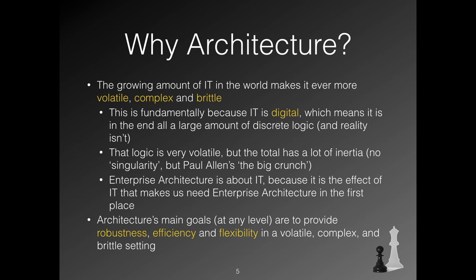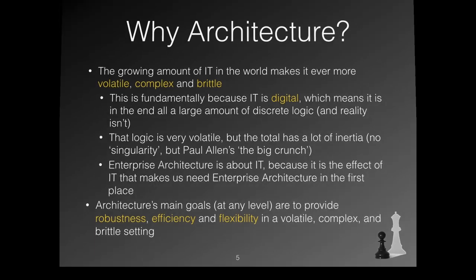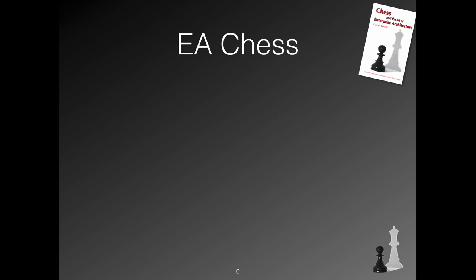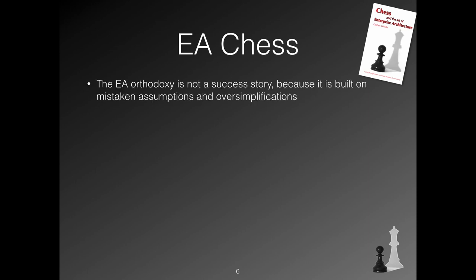It runs in the other direction as well — new technology makes the business change. My approach to enterprise architecture is based on the experience that for effective architecture you need to do things quite differently from the ways proposed by the orthodox so-called best practices. I think the term 'best practice' is one of the most misused terms in our field — treat it with caution. My 2016 Enterprise Architecture Conference keynote explains why orthodox approaches to enterprise architecture have very fundamental flaws that make it most likely impossible for it to work as expected.